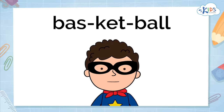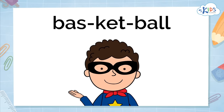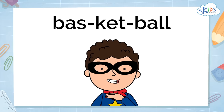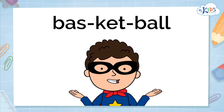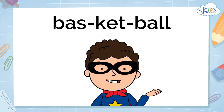You can also check to see if you have divided the word into syllables correctly using this trick. Say the word out loud, and place your hand under your chin as you say it. Bass, ket, ball. See my chin hit my hand three times. So this word has three syllables.